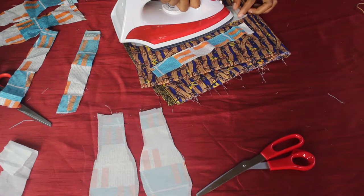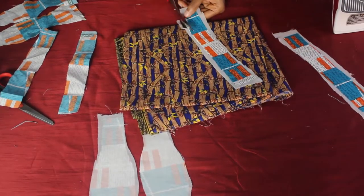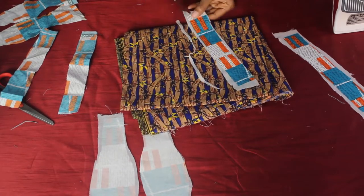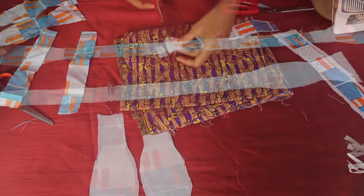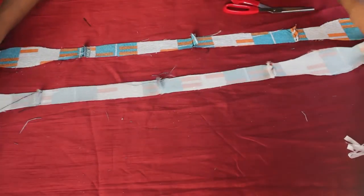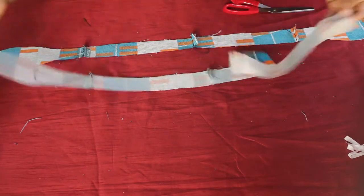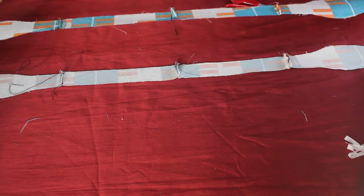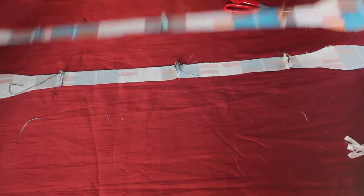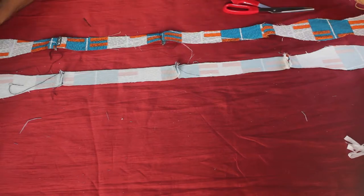So my camera went off at this point, but basically what I did was I took all the pieces with the interfacing fabric on it and I joined them together to form one long piece of fabric. I also did the same for the pieces without the interfacing fabric on it.